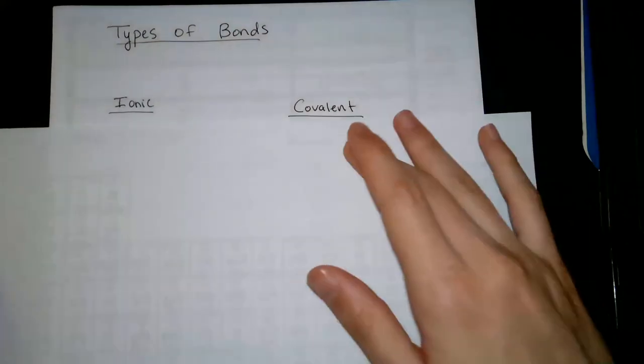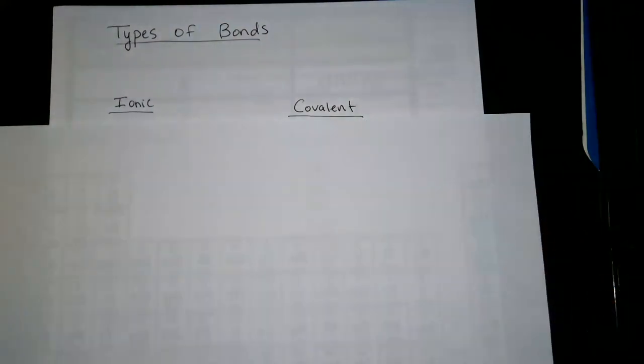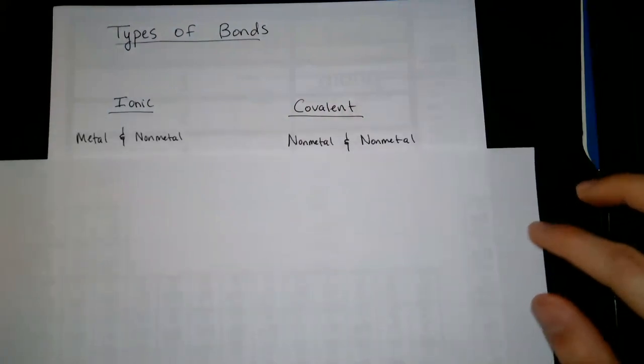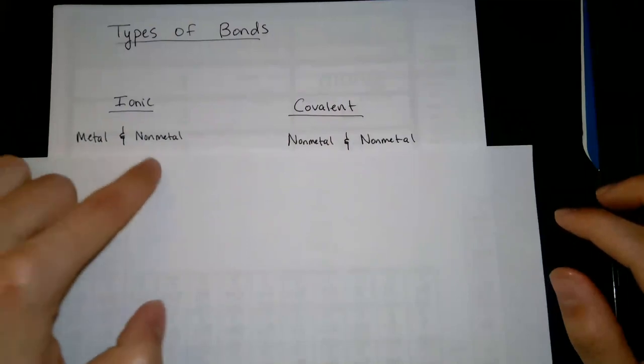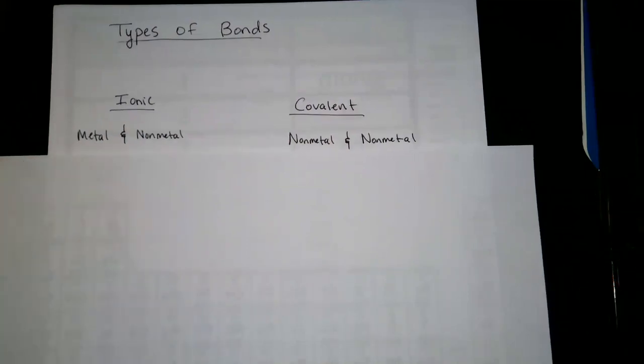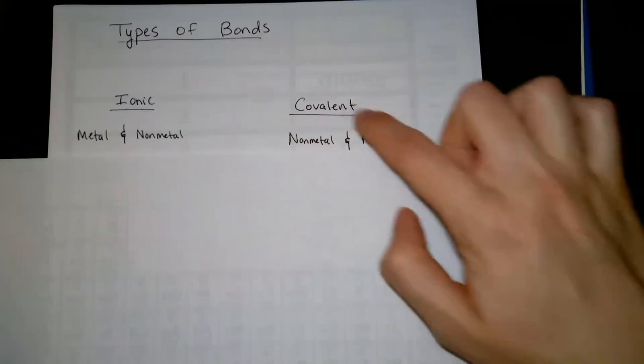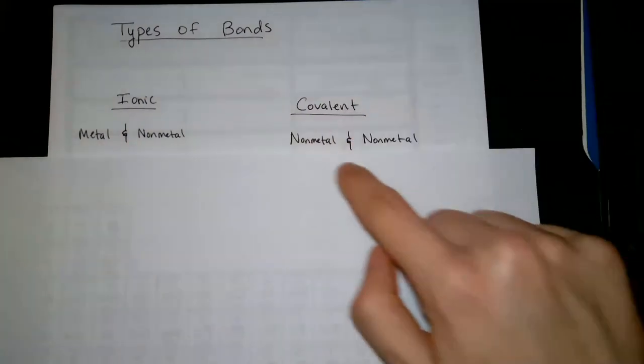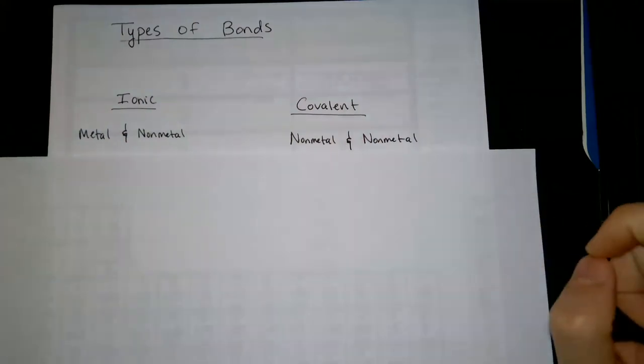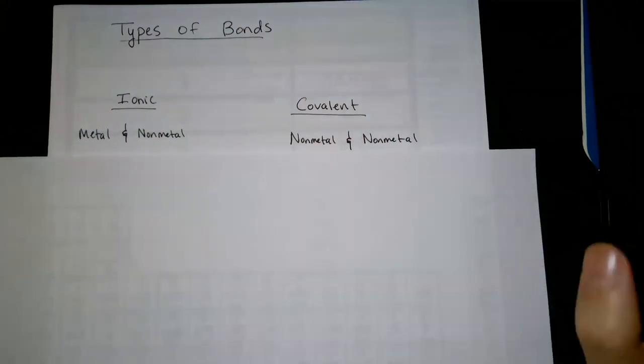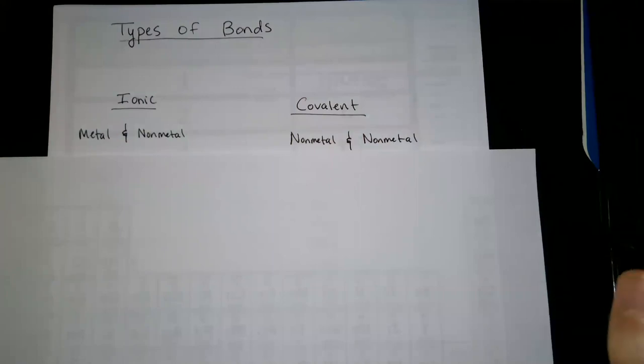There's ionic and there's covalent, and these exhibit two different behaviors. With ionic, it's going to be a metal bonded to some non-metals, at least one non-metal. And with covalent, it's a non-metal and a non-metal. So as long as you can remember that, you can distinguish right away whether something is ionically bonded or covalently bonded.